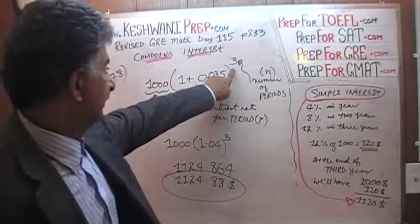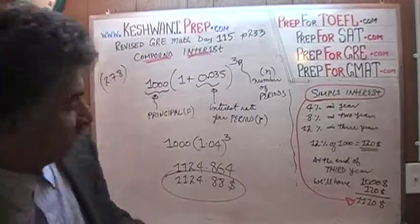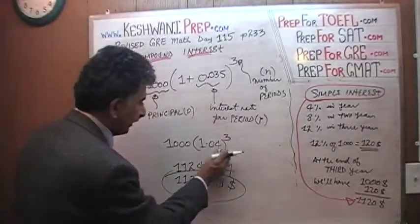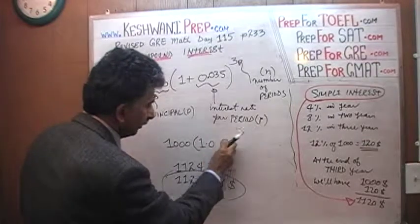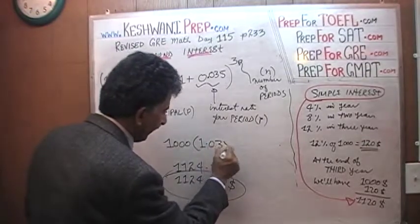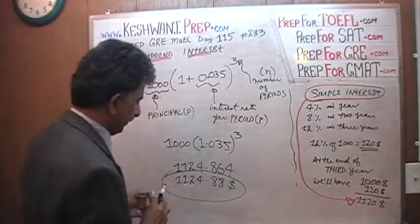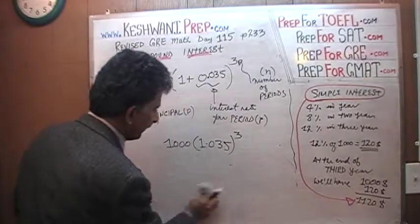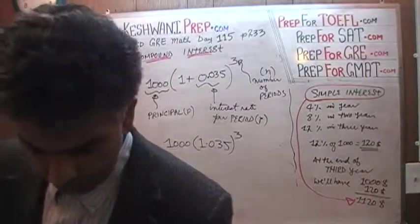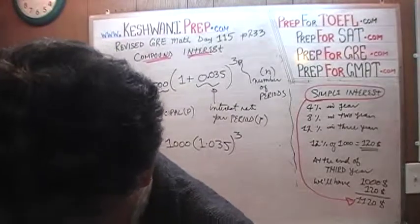Again, we are investing for 3 years and we are investing $1,000. Everything stays the same. The only thing that is going to change here instead of 0.04, we have 0.035 raised to the third power. And if you do it out with the calculator, see what it gives you, then it should give the same exact thing that the book is showing you there.